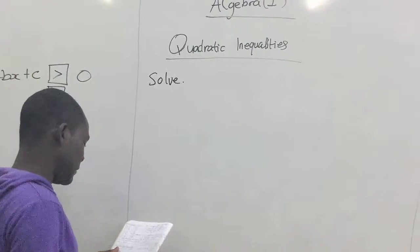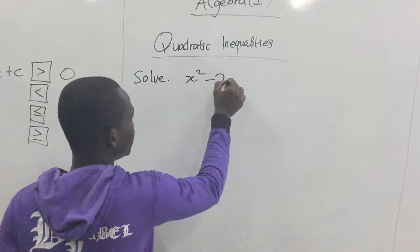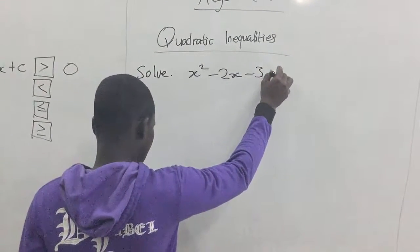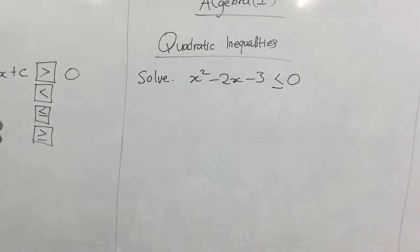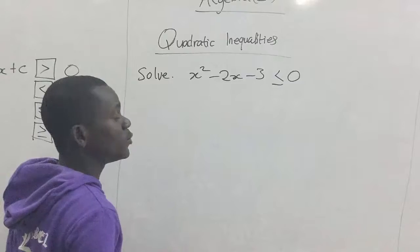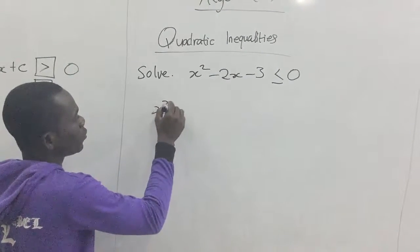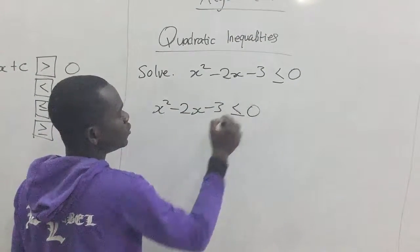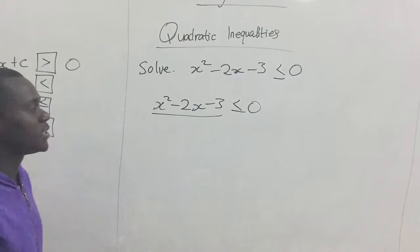So, assuming we have been given this quadratic inequality to solve. We have here x squared minus 2x minus 3 less than or equal to zero. So, we start by first working on the left-hand side of the expression.